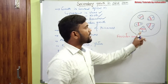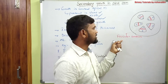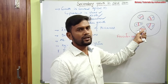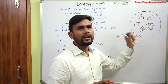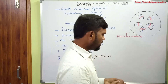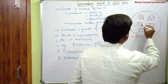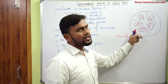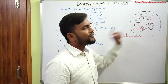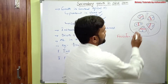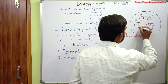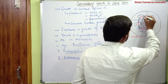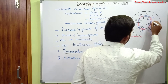Fascicular cambium is also called intrafascicular cambium or intravascular cambium, and also vascular cambium. In between the vascular bundles, there are medullary rays. These medullary rays develop intrafascicular cambium — the cambium present between vascular bundles is called intrafascicular cambium.